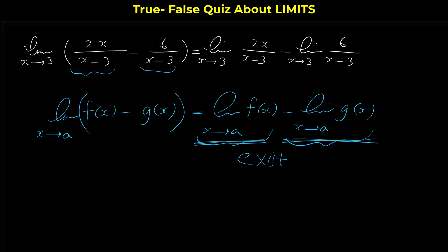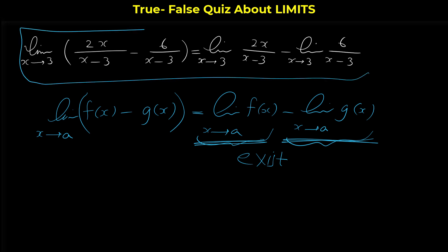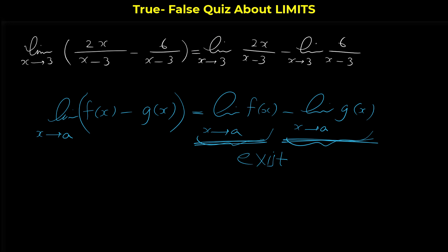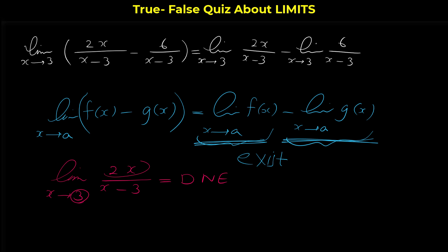So this given statement is true only if the limit of this expression and the limit of this expression both exist. Let's check: the limit of 2x/(x-3) as x approaches 3 does not exist.